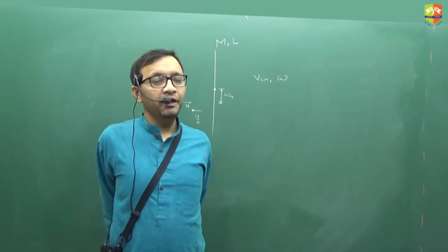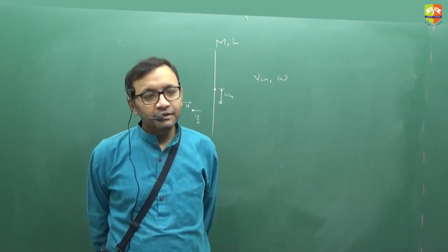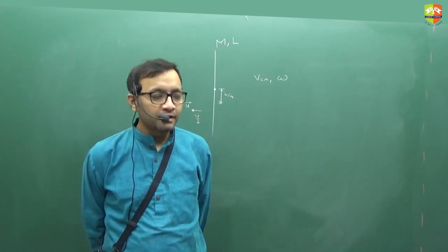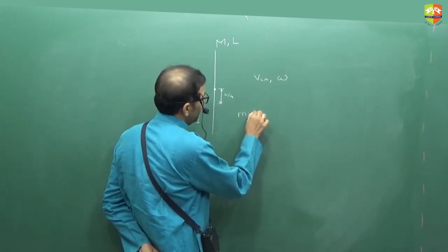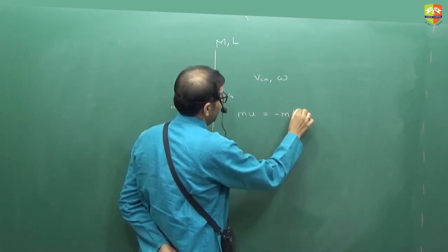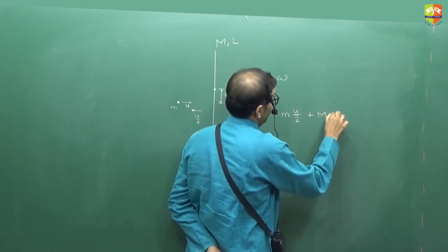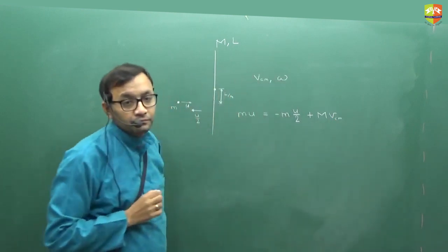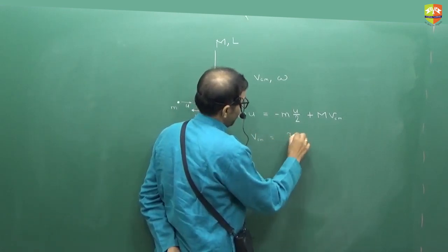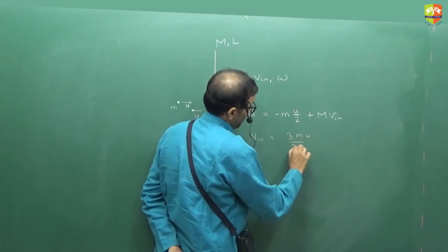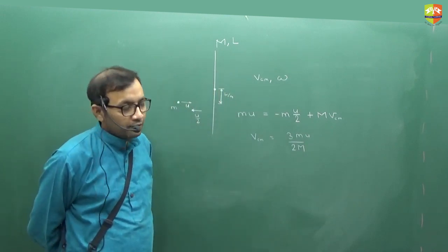Can I use conservation of linear momentum? Yeah. It is a frictionless surface, so net external forces is 0. So initial momentum is m into u, this should be equal to final momentum minus m into u by 2 plus capital M into VCM. So VCM will come out to be equal to how much? This is your VCM. Straightforward, conservation of linear momentum.